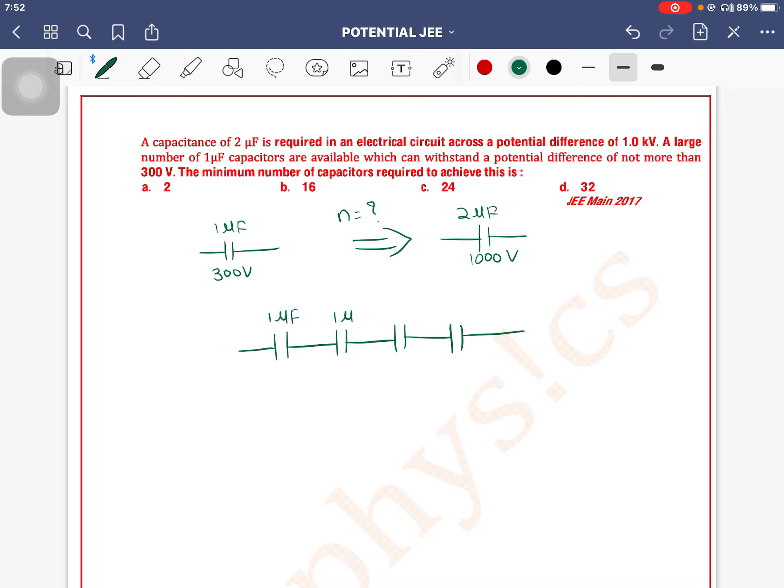When we connect 4 capacitors in series, the net capacitance decreases. The capacitance becomes 1 microfarad divided by 4, which equals 1/4 microfarad. Now I need to work on increasing the capacitance. Currently the equivalent is 1/4 microfarad, but I need 2 microfarad.